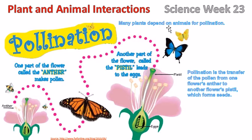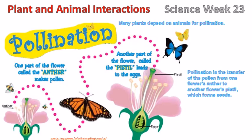Many plants depend on animals for pollination. Pollination is the transfer of pollen from one flower's anther to another flower's pistil, which forms seeds. This diagram shows how the pollen flows from one flower all the way over to another flower. Many bees and butterflies and other insects enjoy this pollen — it tastes good to them and nourishes them just like food does for humans.